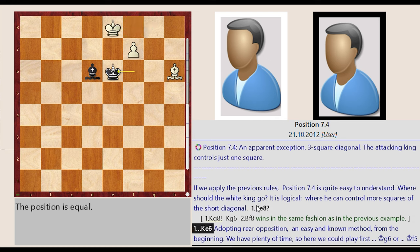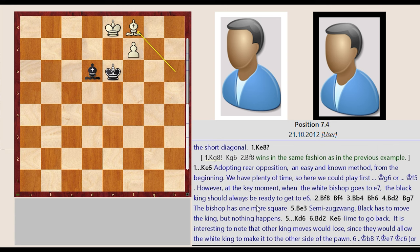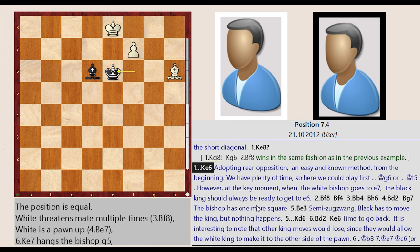King F6 E6. Adopting rear opposition, an easy and known method. From the beginning we have plenty of time, so here we could play first, cent G6 or cent F5. However, at the key moment, when the White bishop goes to E7.